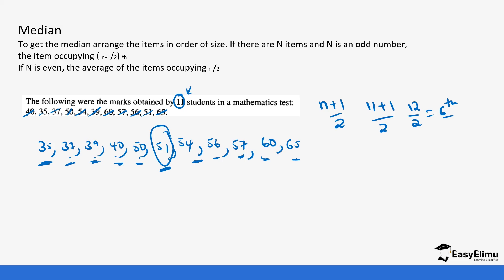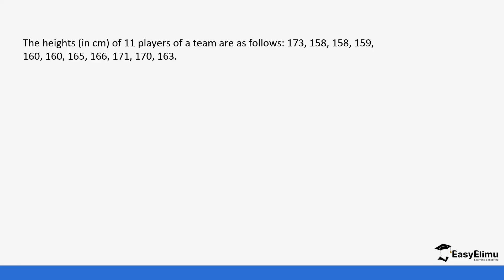Let's look at more examples. The height in centimeters of 11 players of a team are as follows. We already have the value of the players and it is odd. So one more time it's going to be (11+1)/2, which is 12/2. So we are going to look at the sixth value after we arrange our values in order of size.